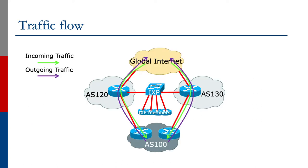The diagram shows how this will work. The green arrow shows incoming traffic from the global Internet going through either AS120 upstream or AS130 upstream to get to AS100. And outgoing traffic will use either or both of the upstream links through AS120 or AS130 to the global Internet.